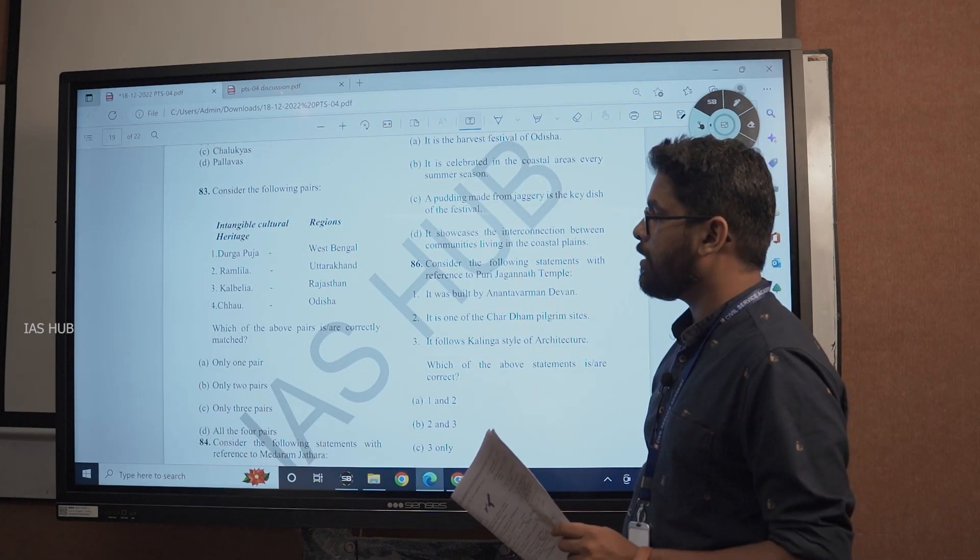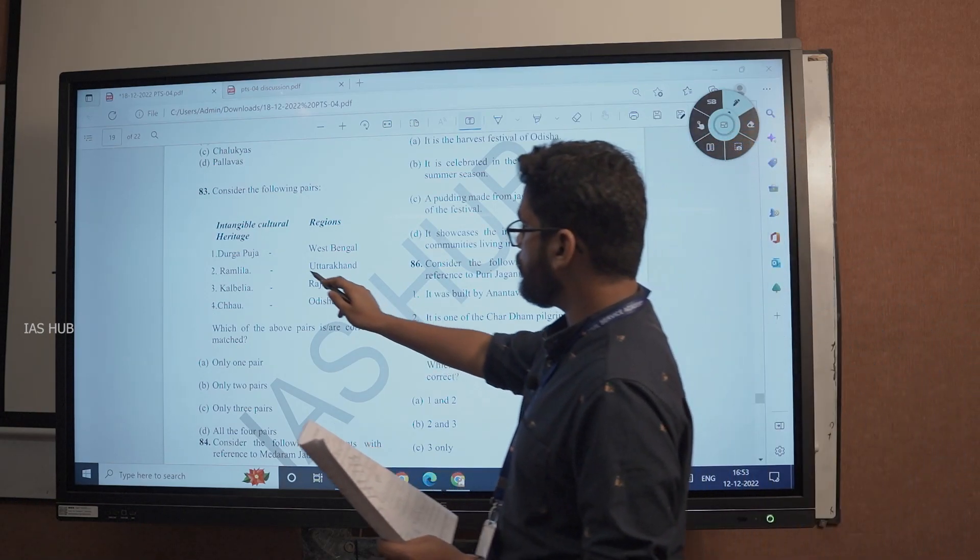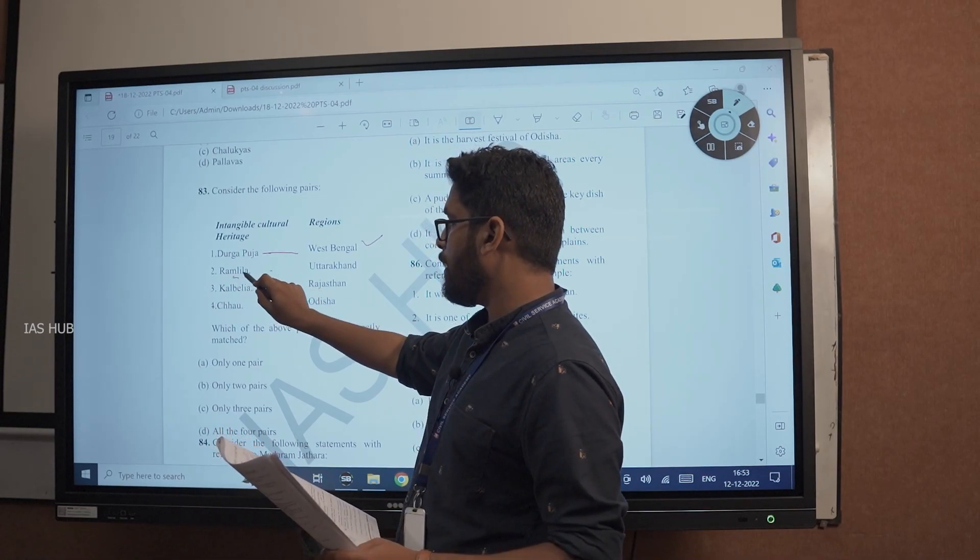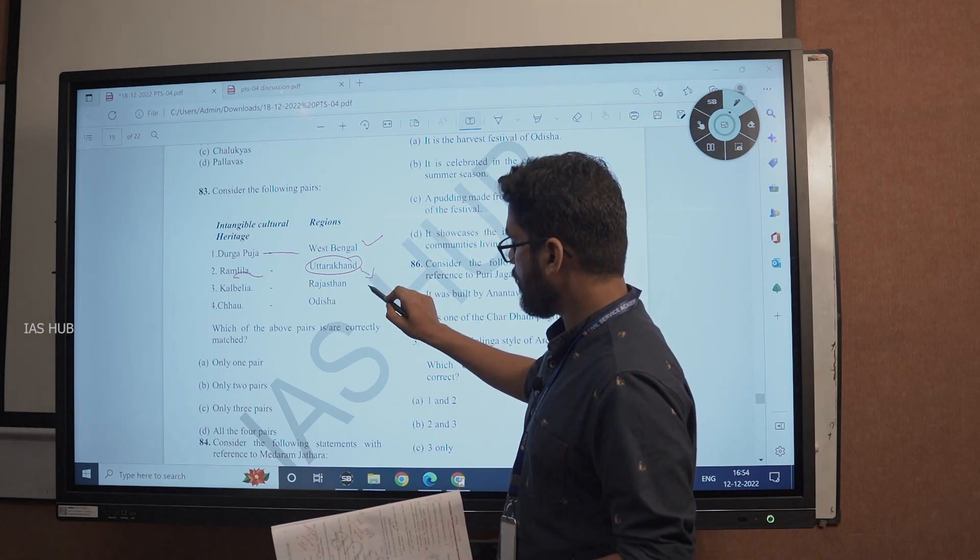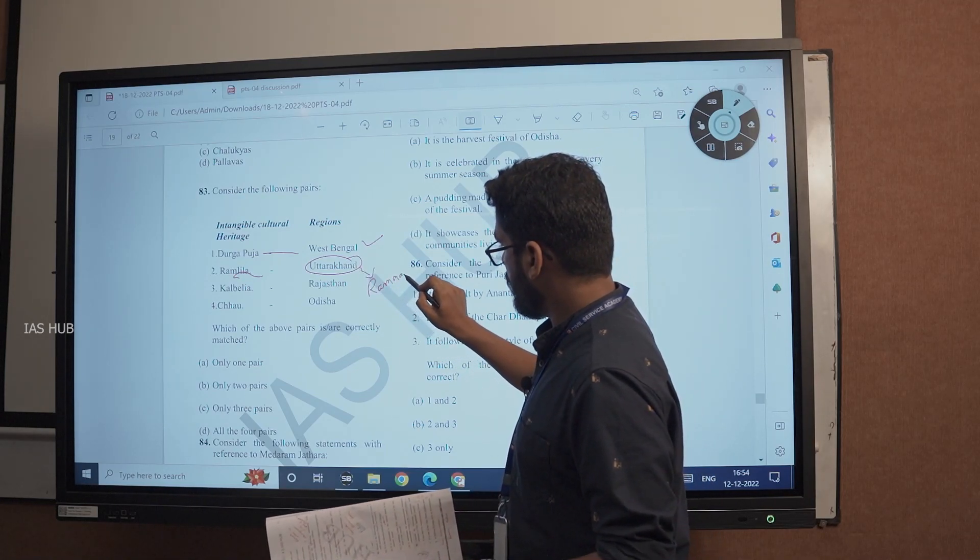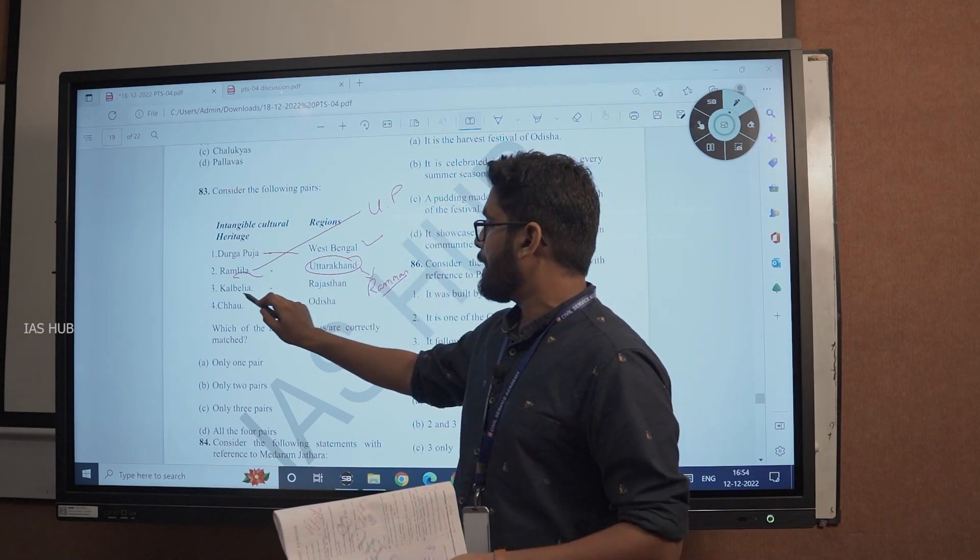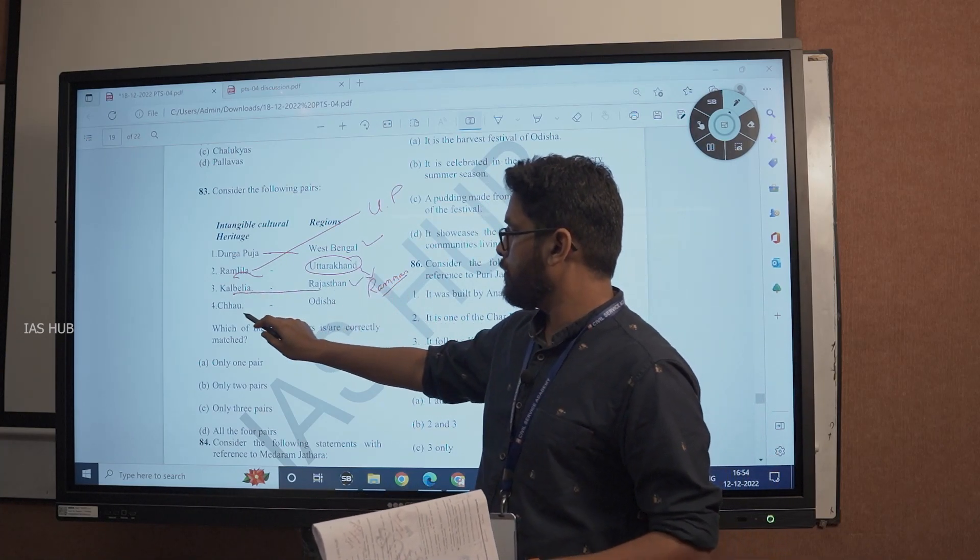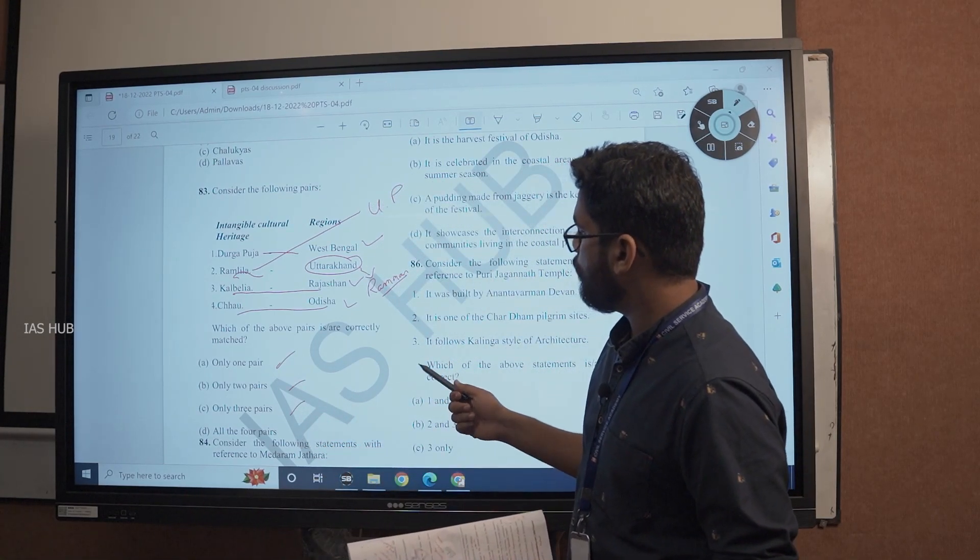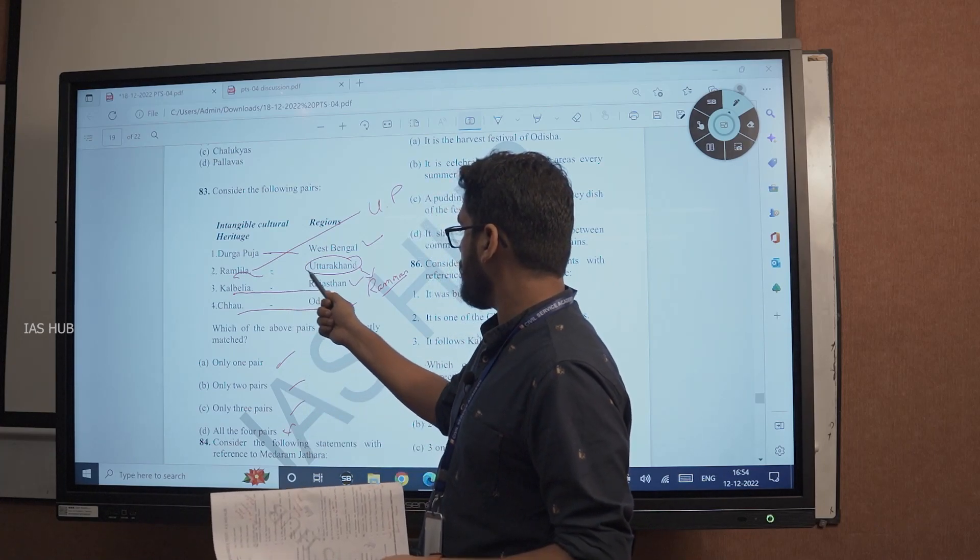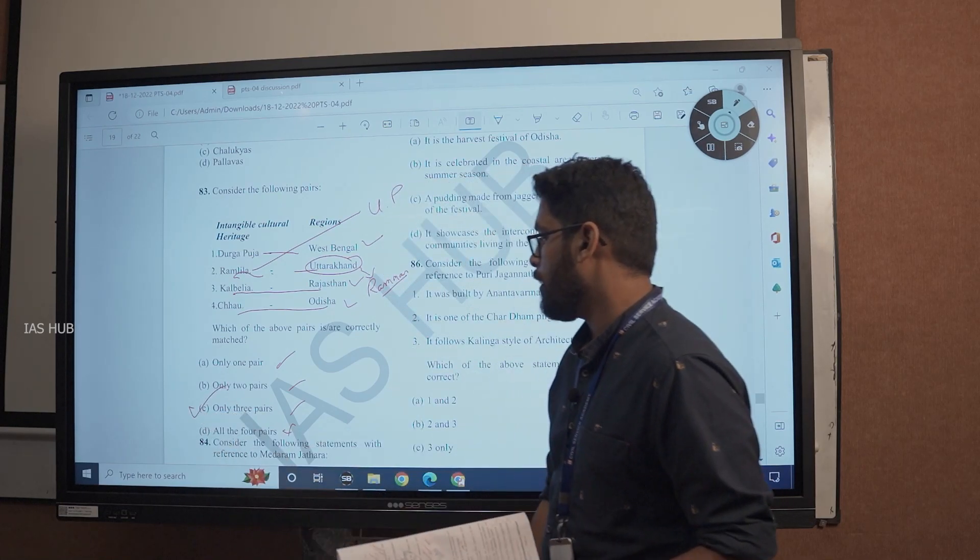Consider the following pairs regarding intangible cultural heritage and its associated regions. Durga Pooja, we all know West Bengal. Ramlila we had discussed earlier. Ramlila is in Uttarakhand in Garhwal region. But Ramlila is in UP. Kalbelia is in Rajasthan. Chhau is in Odisha. All the four pairs are not correct because Ramlila is not in Uttarakhand, it is in UP. So answer is only three pairs, answer option C.